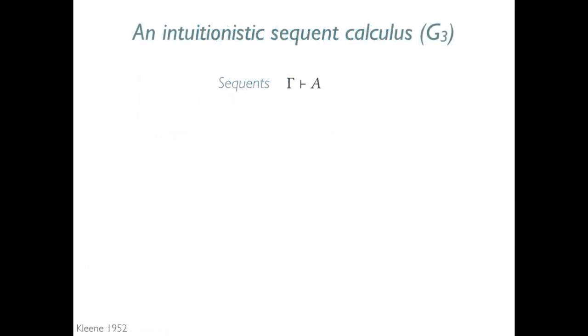To start, I'll briefly review an intuitionistic sequent calculus, G3. Sequents have the form gamma turnstile A, where contexts gamma are sets of propositions A.